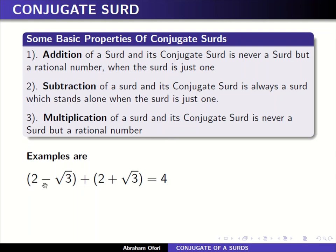Example: the conjugate surd of two minus square root of three is two plus square root of three. If I add them, I add two plus two to get four, then negative square root of three plus square root of three gives zero. So the result is four — a rational number. That's why we say the addition of a surd and its conjugate is never a surd but a rational number.